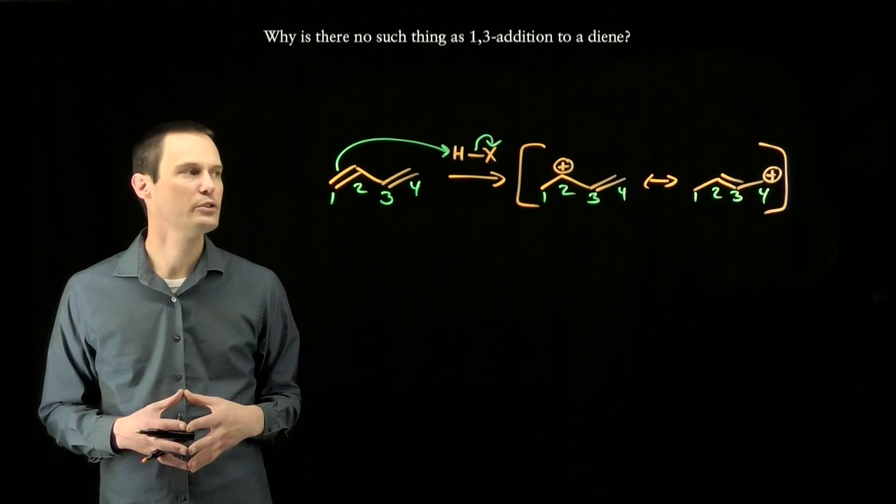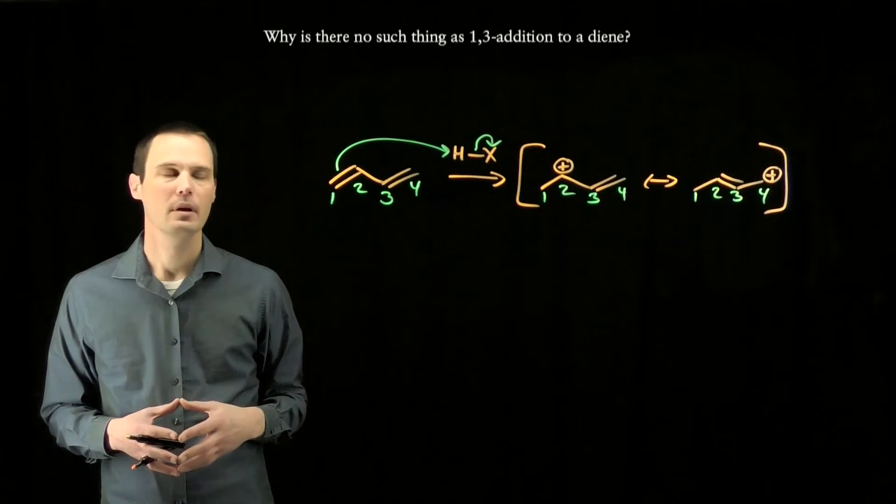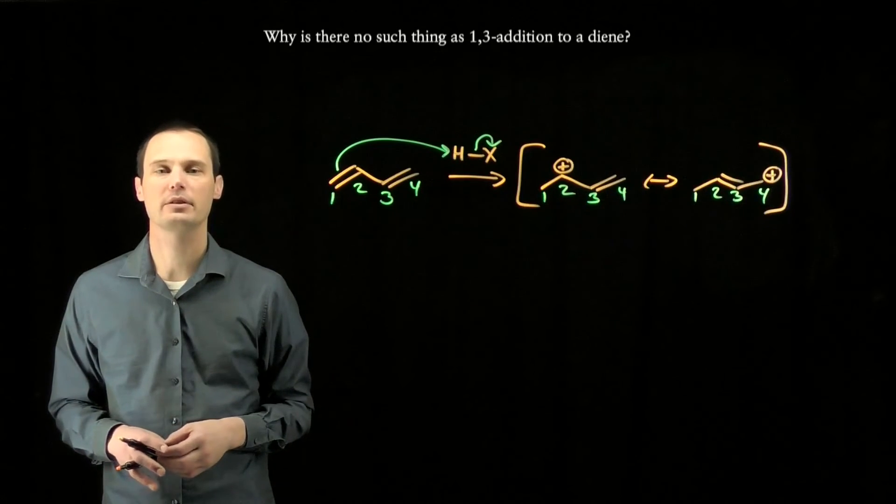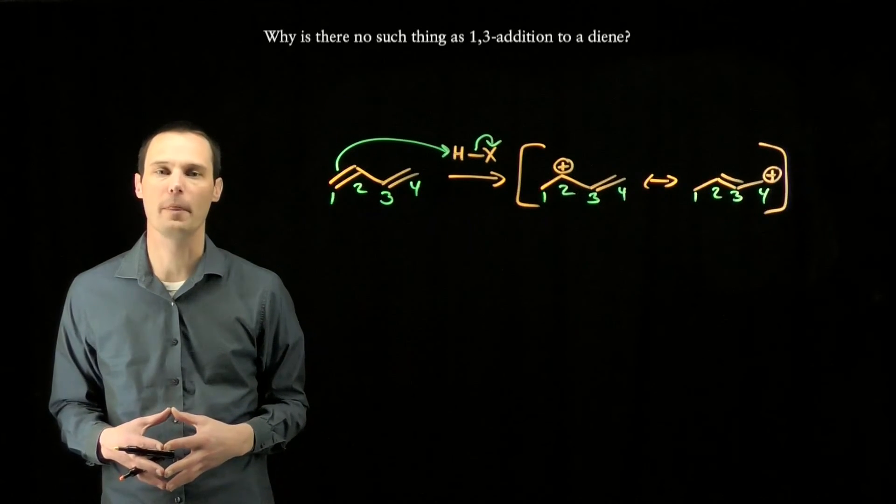That means the X can never add to carbon number three, so we can either get 1,2 addition or 1,4 addition, but because we don't get electrophile at carbon three, we can never get 1,3 addition.